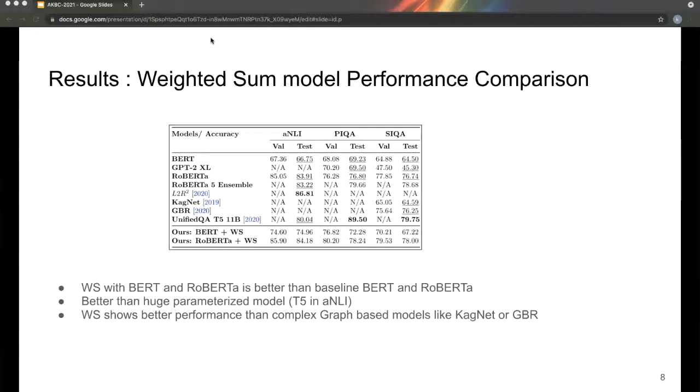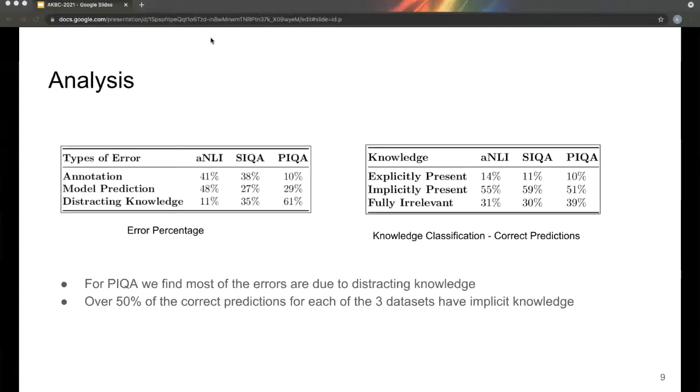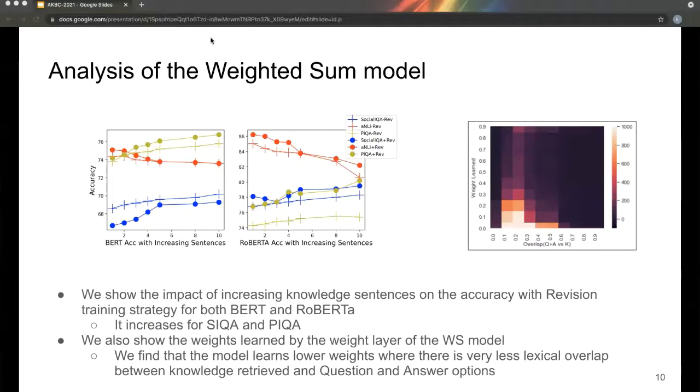Here, we show how our weighted sum model compares with other existing models. We randomly picked 200 samples from each of the datasets and analyzed the performance. We show the impact of number of knowledge sentences on weighted sum model. We also probe the weighted sum layer of the weighted sum model to interpret why it performed better than other strategies.